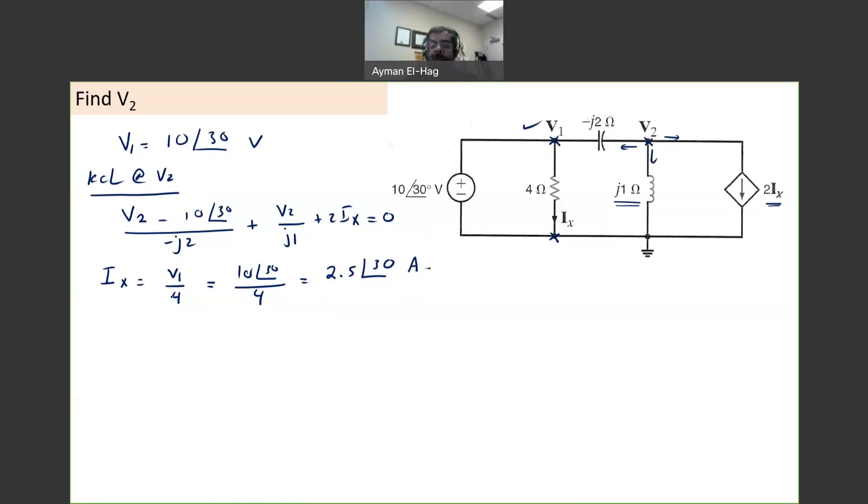I will substitute the value of Ix in equation 1. So we will have V2 minus 10∠30° divided by -j2 plus V2 divided by j plus 2 times Ix, which is equal to plus 5∠30° equal to 0.